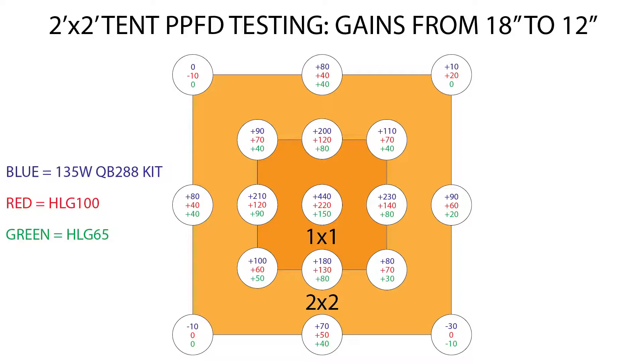However, that being said, moving the lights down didn't really have an effect on the four outermost corners of the 2x2, and even ended up reducing the light in some cases, and this is just due to the beam angle of the diodes, and they were unable to hit those outer corners as effectively when they were lowered down to 12 inches.